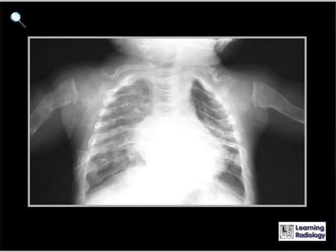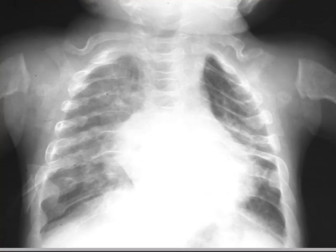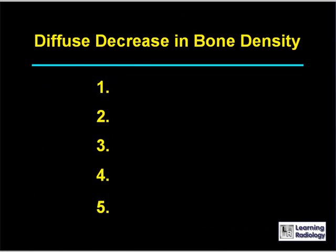This is the next differential. The differential is diffuse decrease in bone density. There are five major causes.